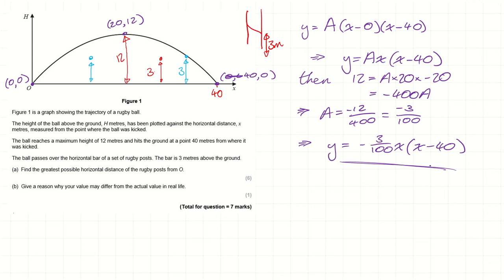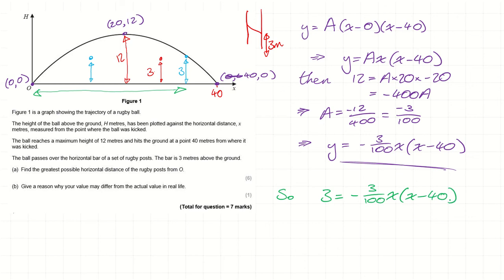That equation will have got me lots of marks in the exam, but I'm not quite finished yet — I've got to actually answer the question: greatest possible horizontal distance. We need to find the distance where the ball is three meters up, so we plug in y equals 3 and solve the resulting quadratic. That quadratic will have two solutions, so I'll leave it to you to figure out which solution is the one we want and what the interpretation of the other solution is. We definitely only want one of them, and there's a reason two come up.